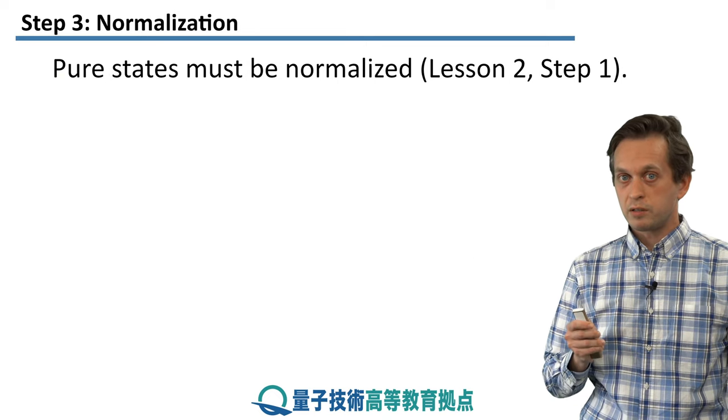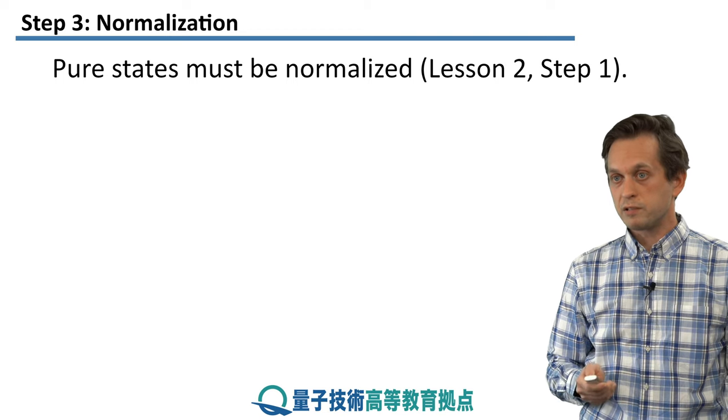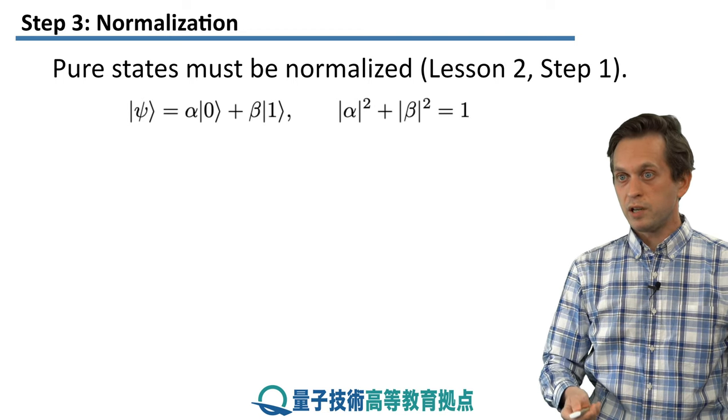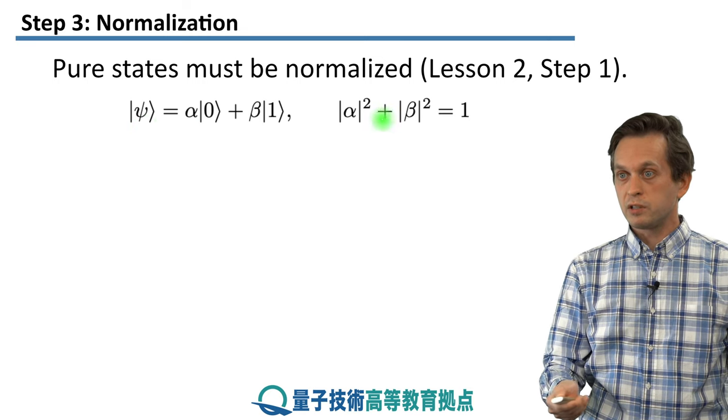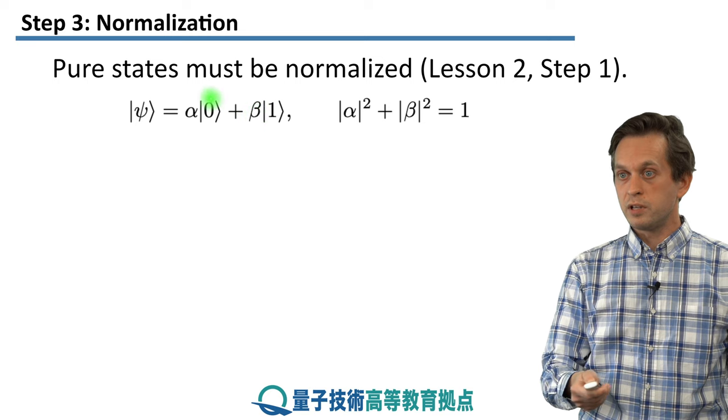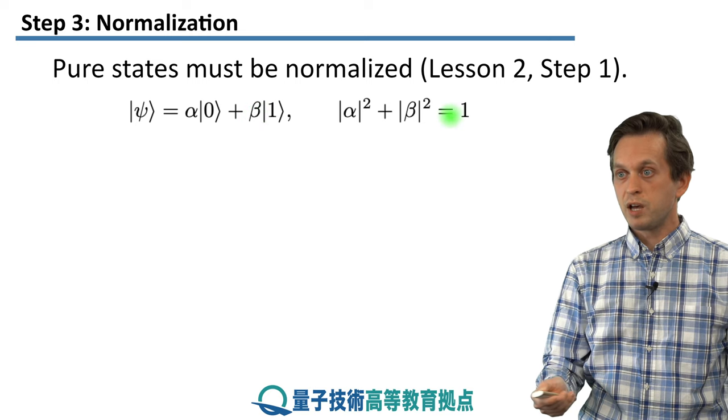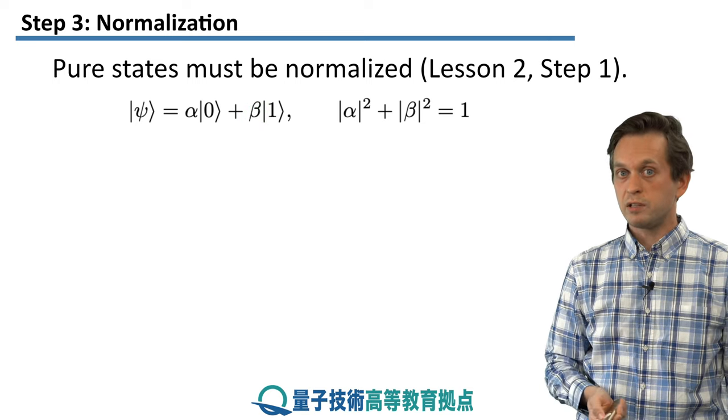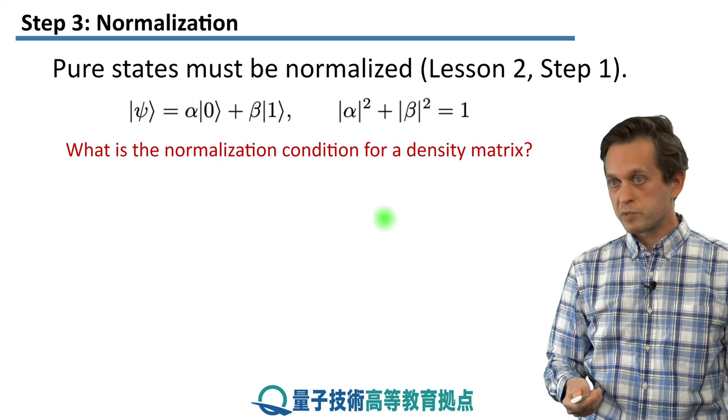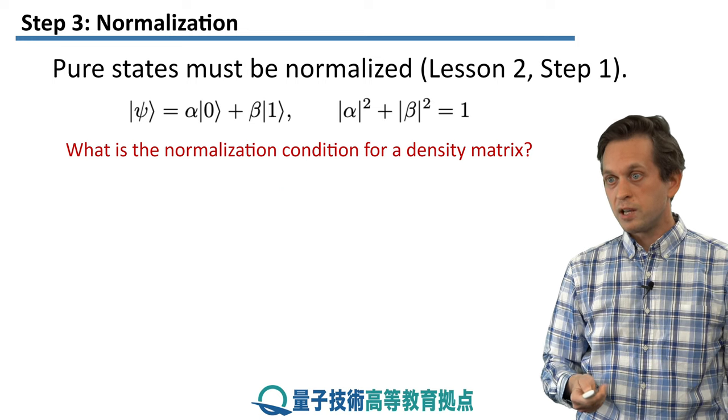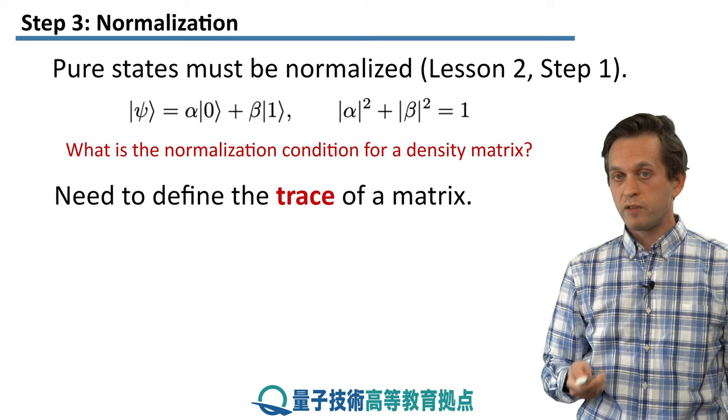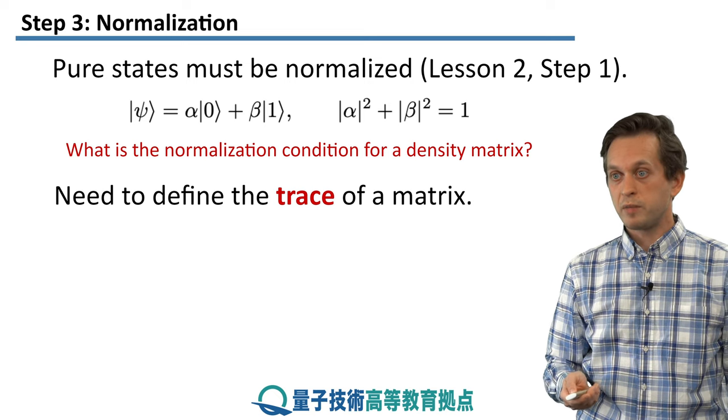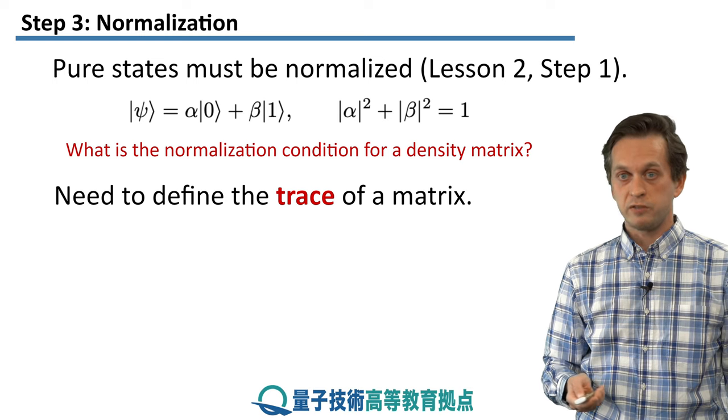Also, remember that quantum states in the pure case, they have to be normalized. So what does that mean? Again, just to remind you, for an arbitrary state psi, we've got the following condition, that the mod squared of the probability amplitudes summed up must be equal to 1. Otherwise, we cannot use that state to compute probabilities of measurement outcomes. So what is the corresponding normalization condition in the density matrix formalism? Well, before we can actually answer that, we have to define a new mathematical notion called the trace of a matrix.